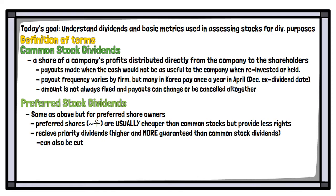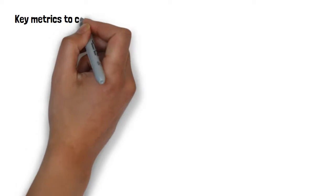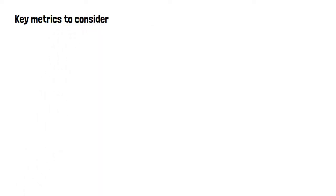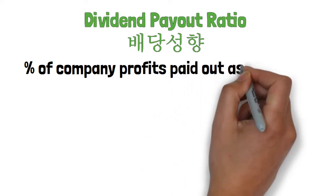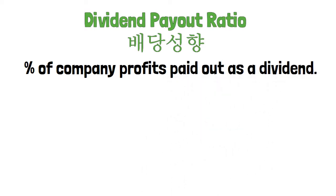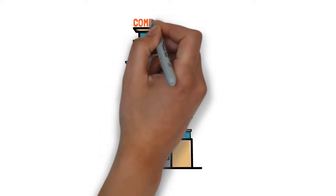Now those are the foundational definitions, but I also want to get into a few more terms that you should know when looking at a stock's dividends. First is the dividend payout ratio, or in Korean, their baedang seonghyang. This ratio tells us what percentage of a company's net income is paid out as a dividend. This is important to note because dividends are usually paid out when companies have excess income that would not necessarily provide more returns if reinvested into the company. Let's break that down with an example — this is Company A.